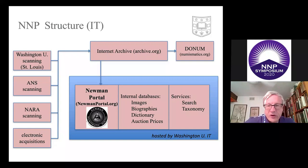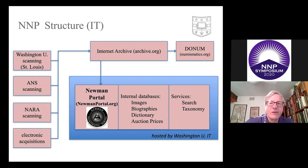The site also provides a taxonomy or hierarchy of all the information. Any document added to Newman Portal has to be classified — it's got to be a periodical, an auction catalog, or an archive item — and then we drill down even further. If it's an auction catalog, it has to be associated with a certain auction house. By having that hierarchy, you make things much more discoverable.